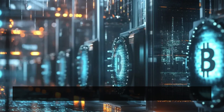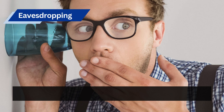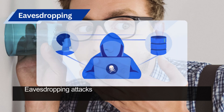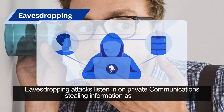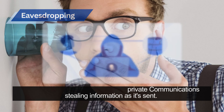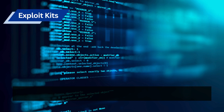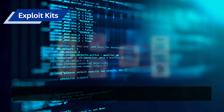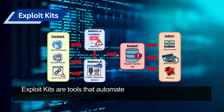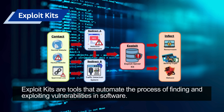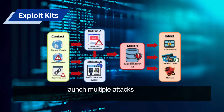With cryptojacking, you might not even notice except that your computer is running slower. Eavesdropping attacks listen in on private communications, stealing information as it's sent. Exploit kits are tools that automate the process of finding and exploiting vulnerabilities in software, allowing hackers to launch multiple attacks quickly.